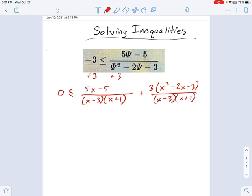And now I need to combine all this stuff on the right into a single fraction. So to do that, we're going to say 0 is less than or equal to, and now we have a big fraction. Common denominator, right? x minus 3 and x plus 1. And the top of this fraction is 5x minus 5 plus 3x squared minus 6x minus 9. I'm distributing that multiplication from the right-hand fraction.